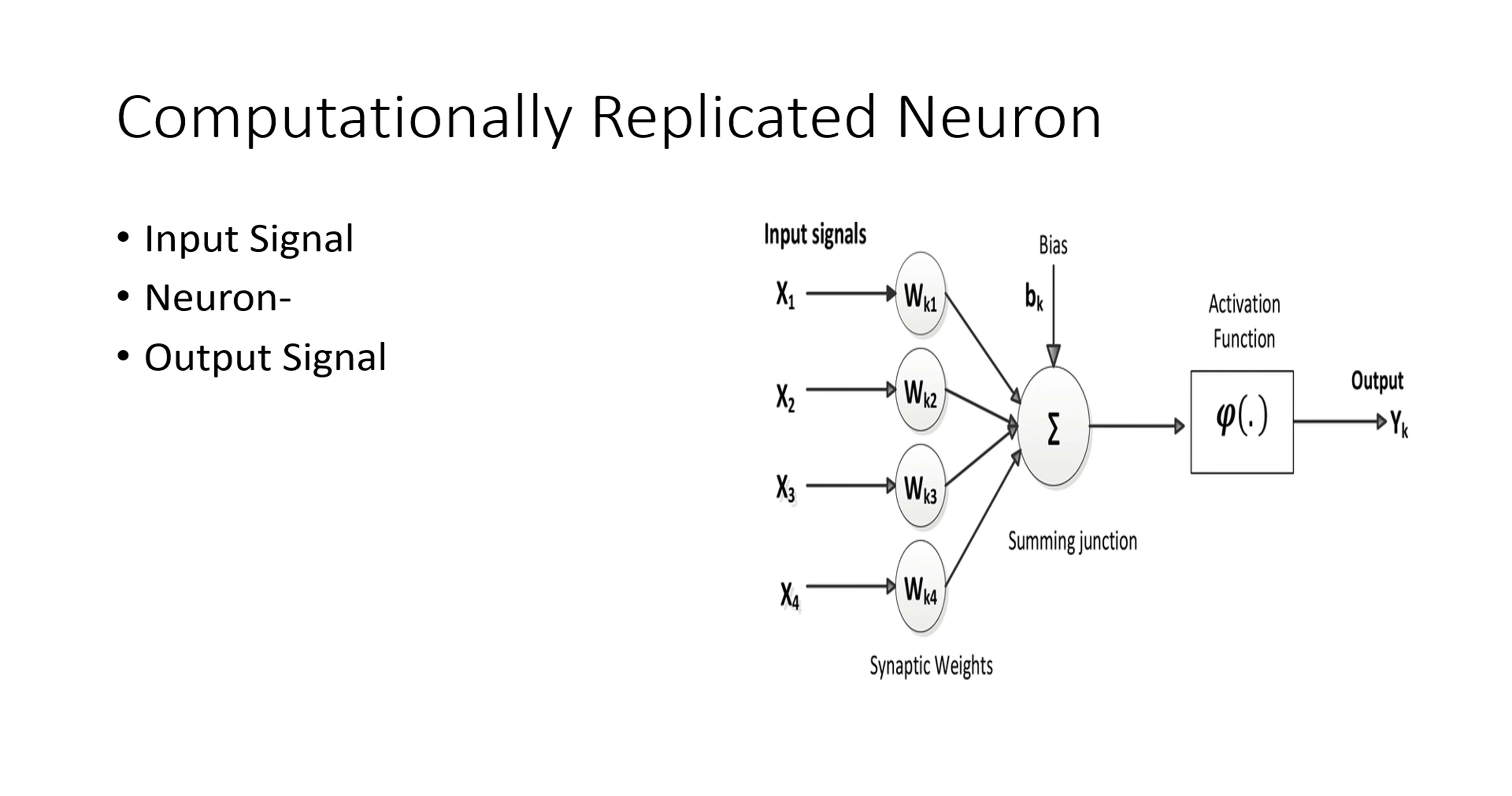These are computationally replicated neurons. How did computer science start to replicate these neurons? There is an input signal, here is a neuron, and here is an output. There is an activation function as well in the post-processing. Once it has a bias, then we come to a weight, which will give us an output signal. The neuron is the heart of processing.